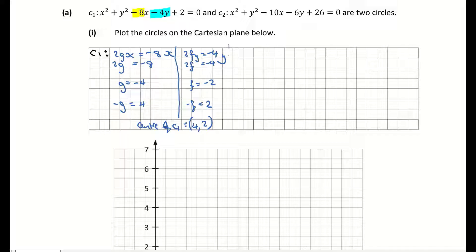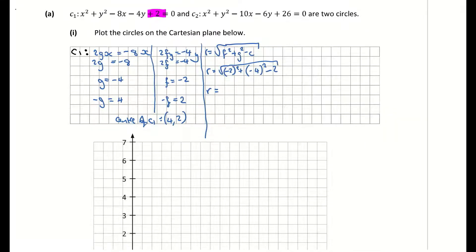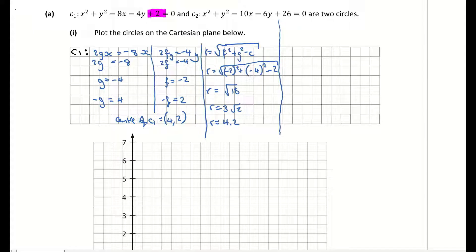Now finding the radius of C1. The radius from the log tables is the square root of f squared plus g squared minus c. We have f equals minus 2 and g equals minus 4, so it's the square root of (minus 2) squared plus (minus 4) squared minus the constant 2. Working that out gives a radius of the square root of 18, which is 3 root 2, or approximately 4.2 units.